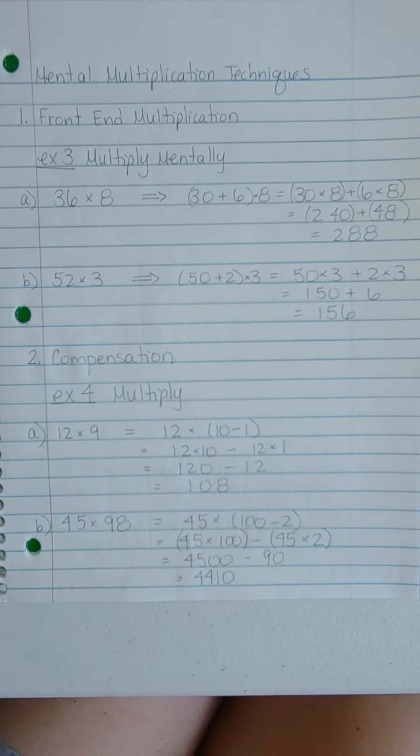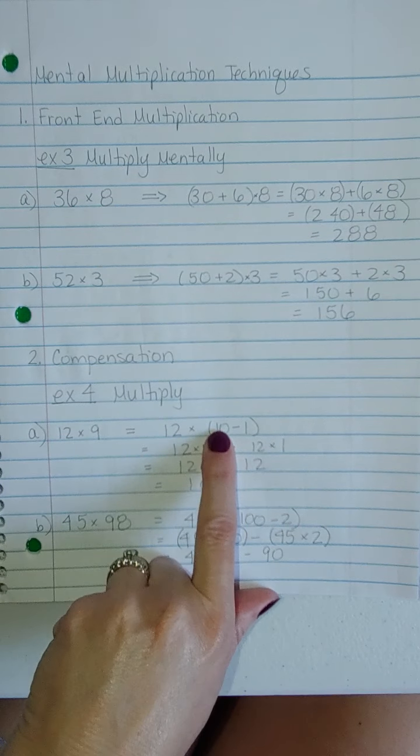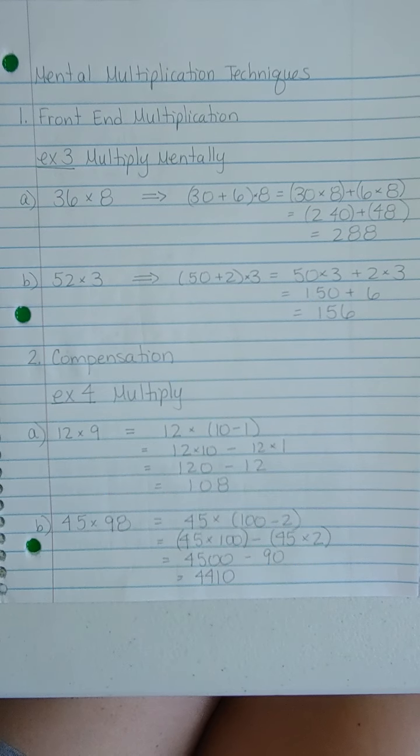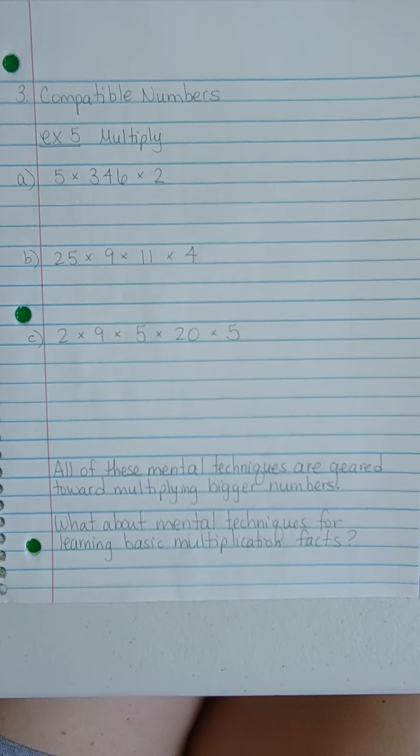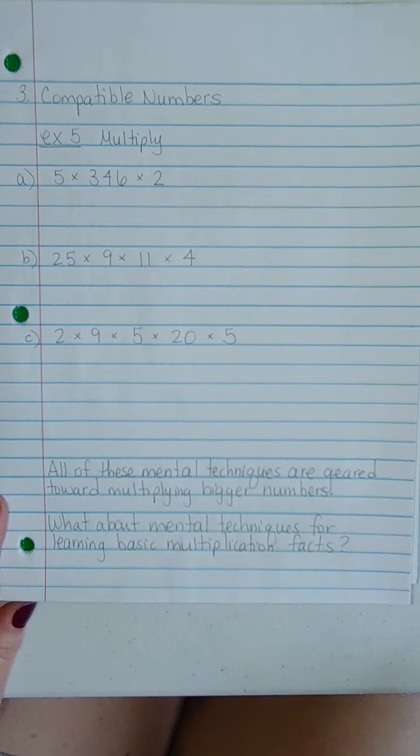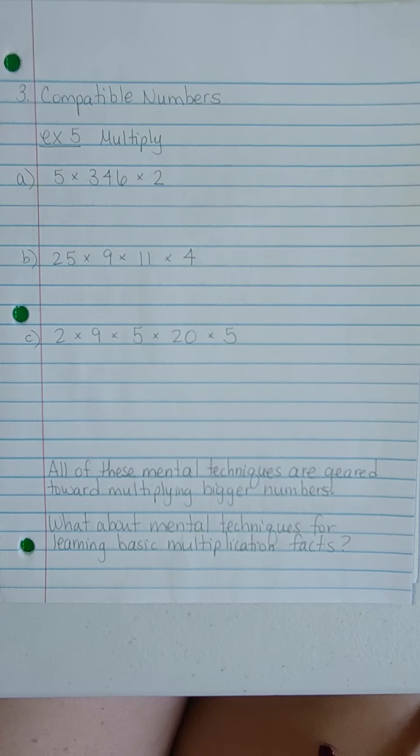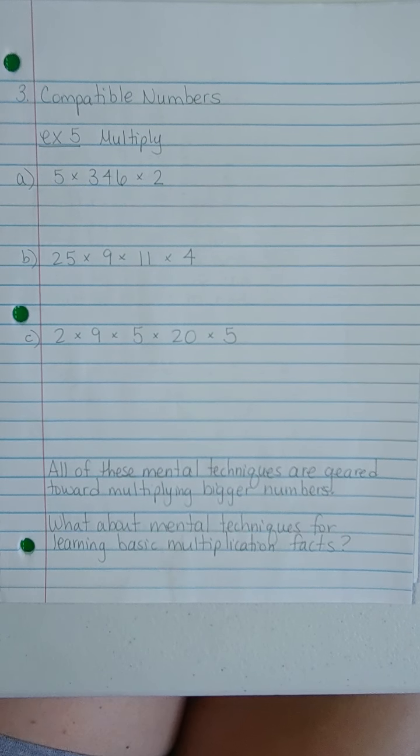So we have this front-end multiplication and all these kind of utilize the distributive property. We have compensation, which means that we change these numbers and then we compensate for it. So we change 9 to something nicer, which is 10. But then we have to compensate for changing it. We have compatible numbers. Now these, I didn't do because I wanted to see if you guys could find some compatible numbers. Now again, what's compatible for some people may not be compatible for others. But I think most of these will probably be able to agree on. So pause the video and see what you can do with multiplying these in your head and how you would group these.